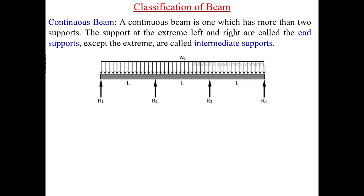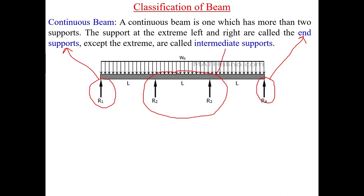The characteristic feature of a continuous beam is that it has supports at the ends, called end supports, and supports in between, called intermediate supports. These are the main classifications: how beams are defined by type of support or type of load. You can have a point load or distributed load, cantilever beam, simply supported beam, simply supported beam with single or double overhang, fixed beam, and continuous beams. We shall look at shear force and bending moment diagrams for these.